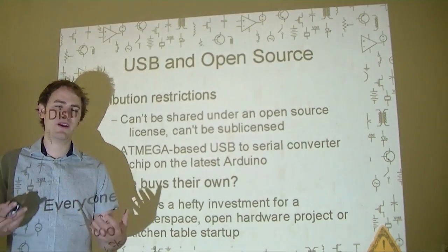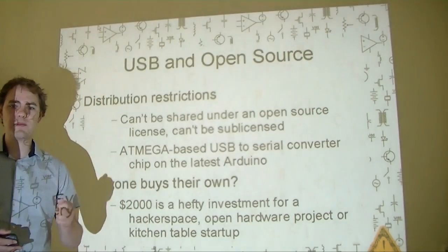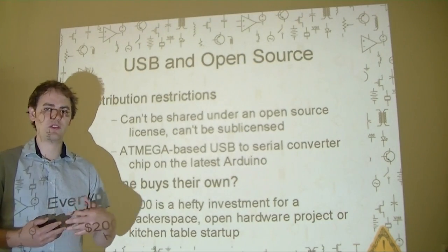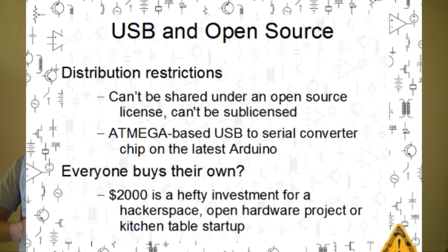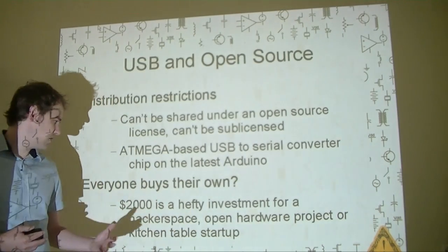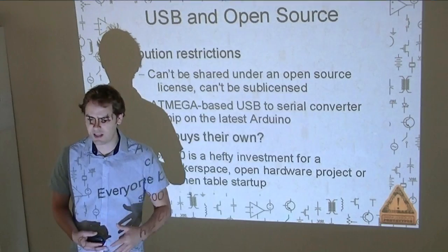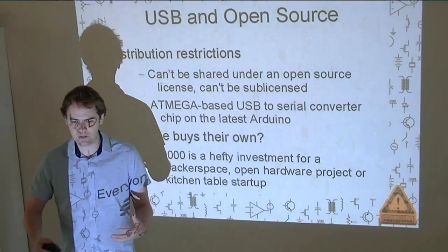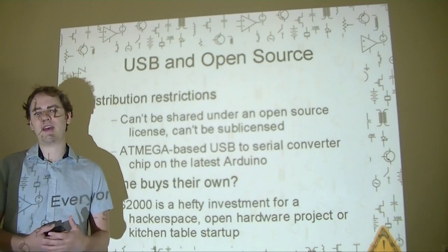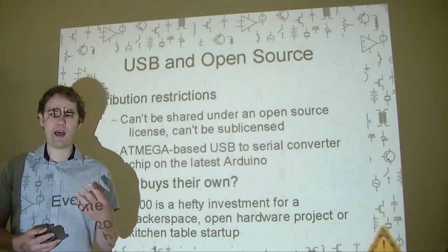The reason this matters is because USB and open source don't jive together. When you sign up for that USB ID, you sign a contract that says you won't sub-license it or redistribute it — and that includes redistributing it with open source firmware and software. That has real-world consequences. If you build your next great device on the new Arduino Uno, you're going to have to shell out $2,000 to get your own USB ID for the new USB-to-serial converter chip, or you'll have to redesign the hardware based on an older version. $2,000 doesn't sound like a lot for a big corporation, but if you're a hacker space, a forum, a community group, an open source project, or somebody trying to get their first 25 kits out the door, that's a prohibitive cost. It's definitely a barrier to open source hardware, and that's why it's an issue we need to address.